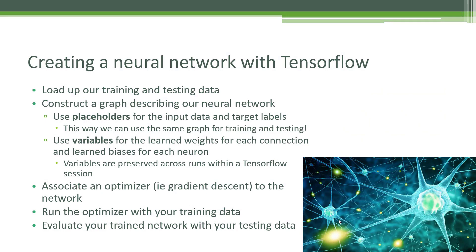If we're going to actually create a complete deep learning network from end to end, there's more to it than just computing the weights between different layers of neurons. We have to actually train this thing and run it when we're done. The first thing we need to do is load up any training data we have — data that contains the feature data we want to train on and the target labels. In order to train a neural network, you need a set of known inputs with a set of known correct answers that you can use to converge on the correct solution of weights that lead to the behavior you want.